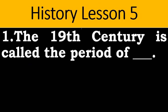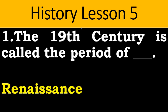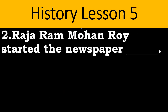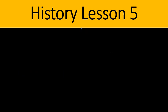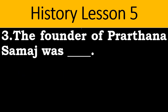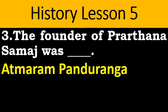Question number one: The 19th century is called the period of — answer is Renaissance. Raja Ram Mohan Rai started the newspaper called Samvada Kaumudi. The founder of Prarthana Samaj was Atmaram Panduranga.